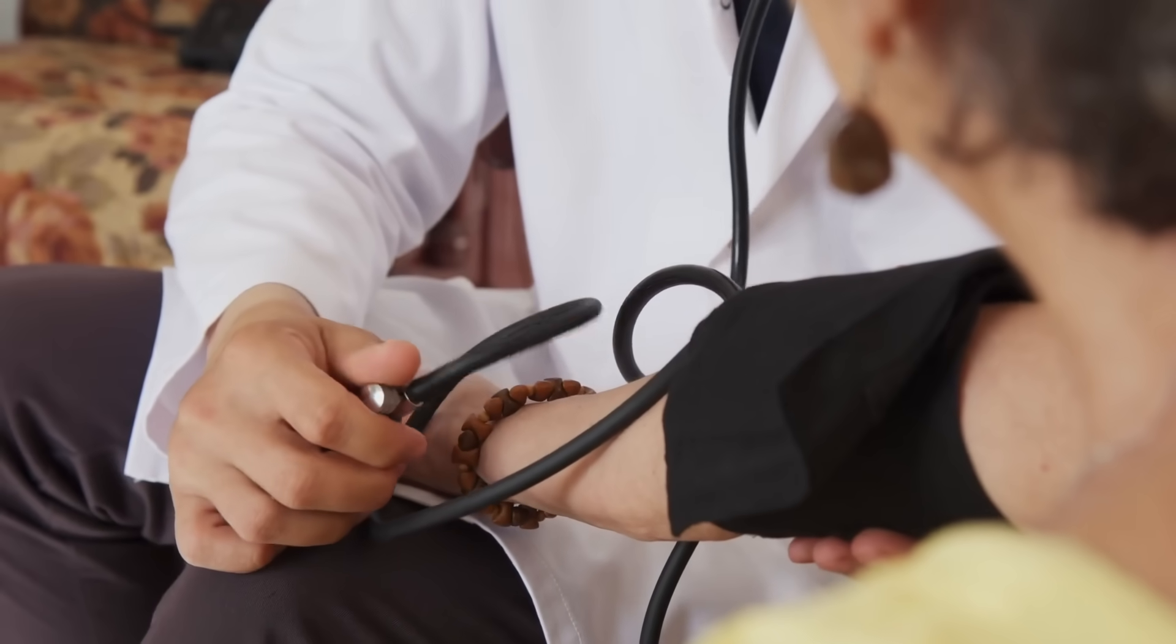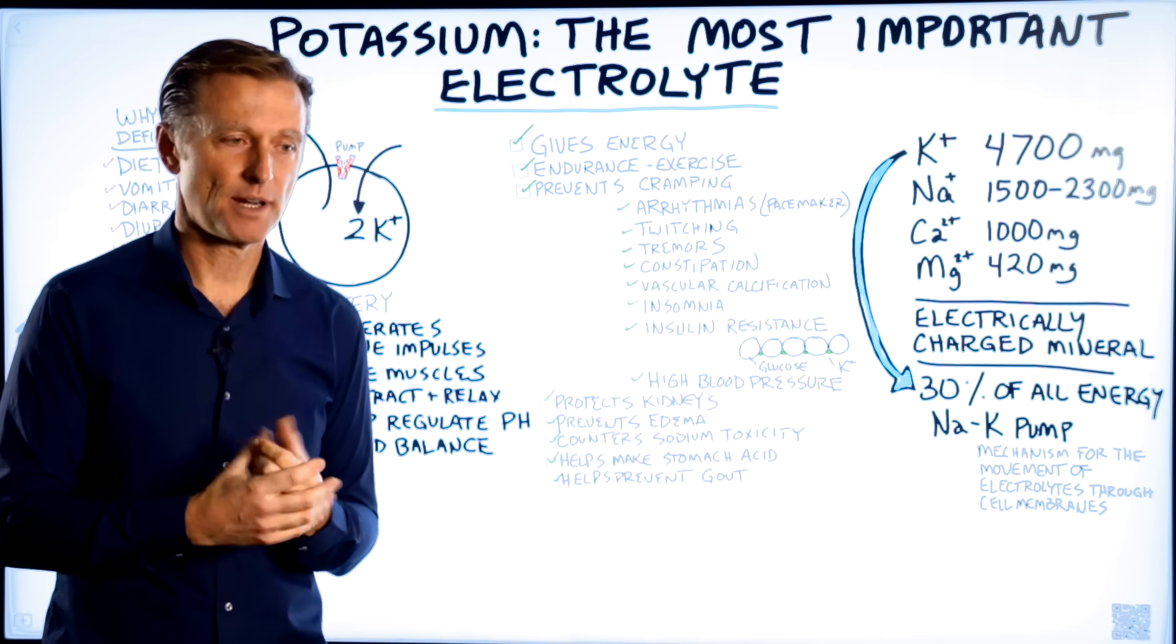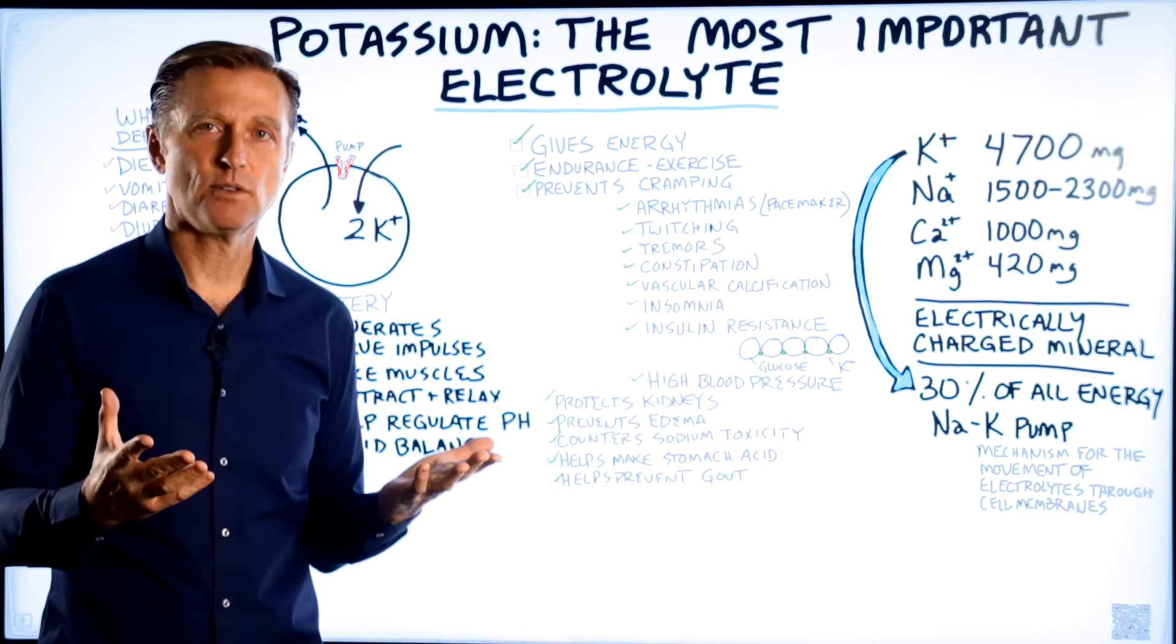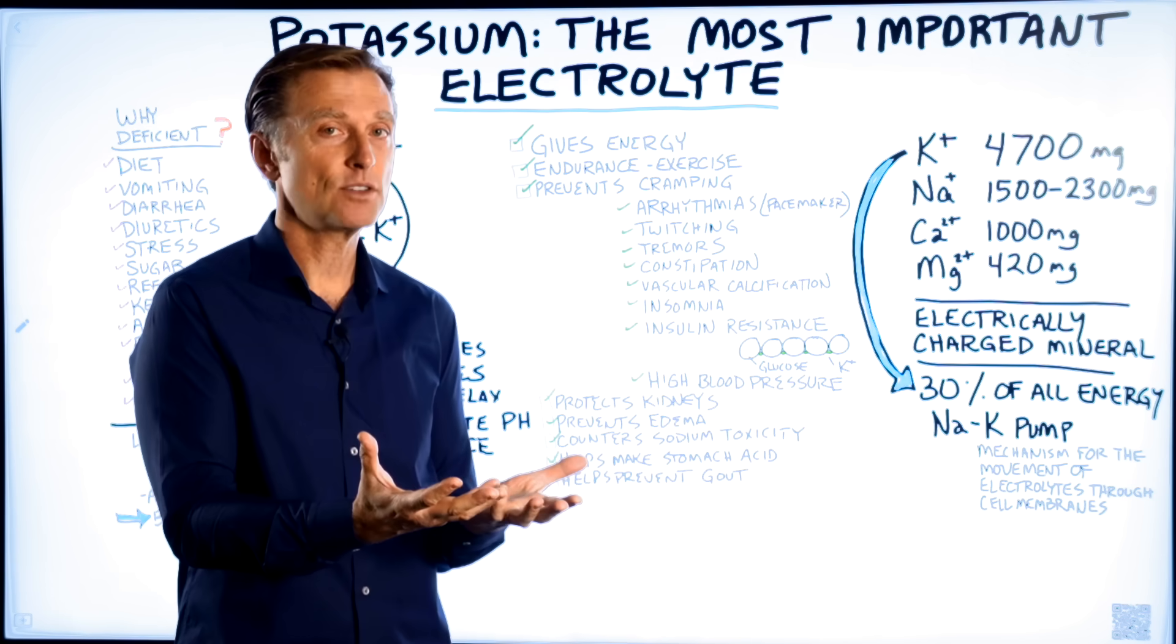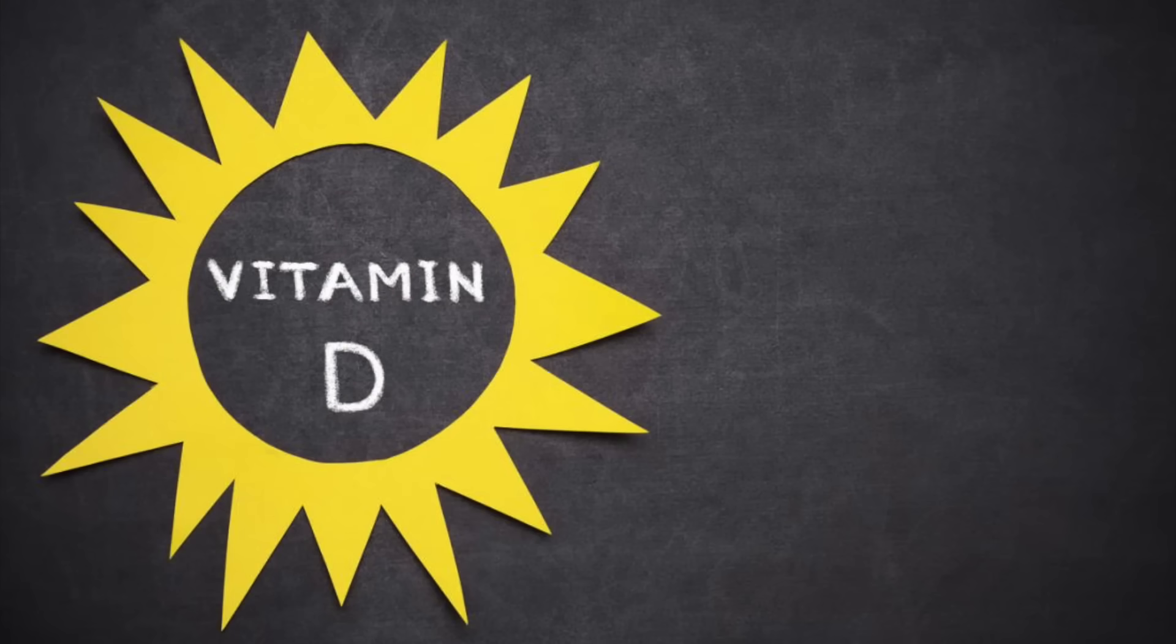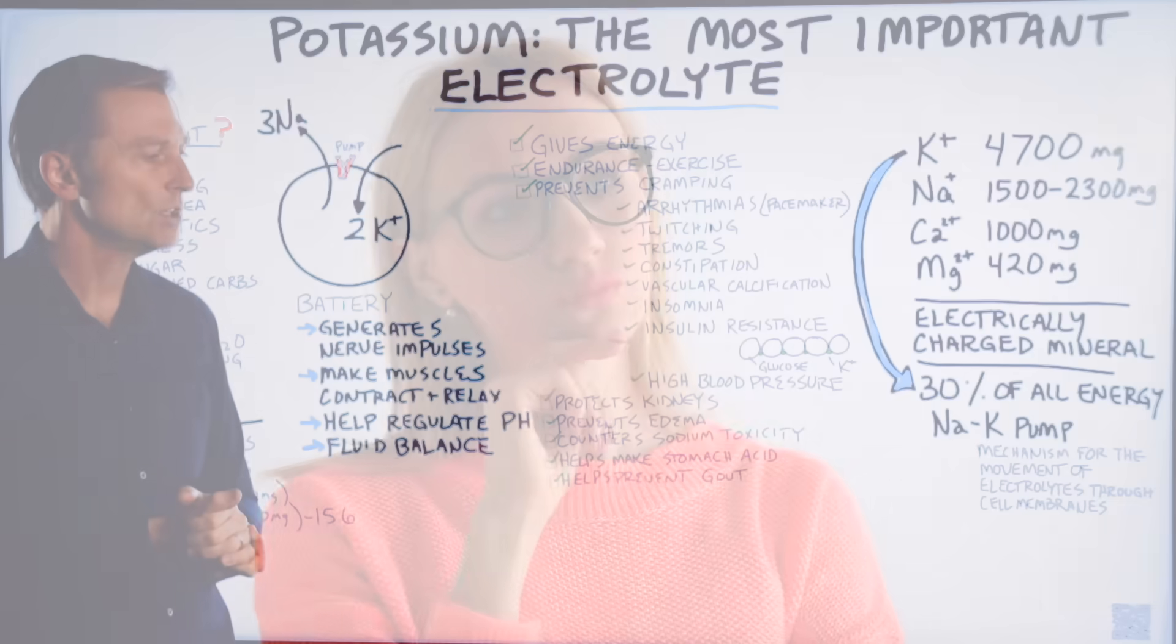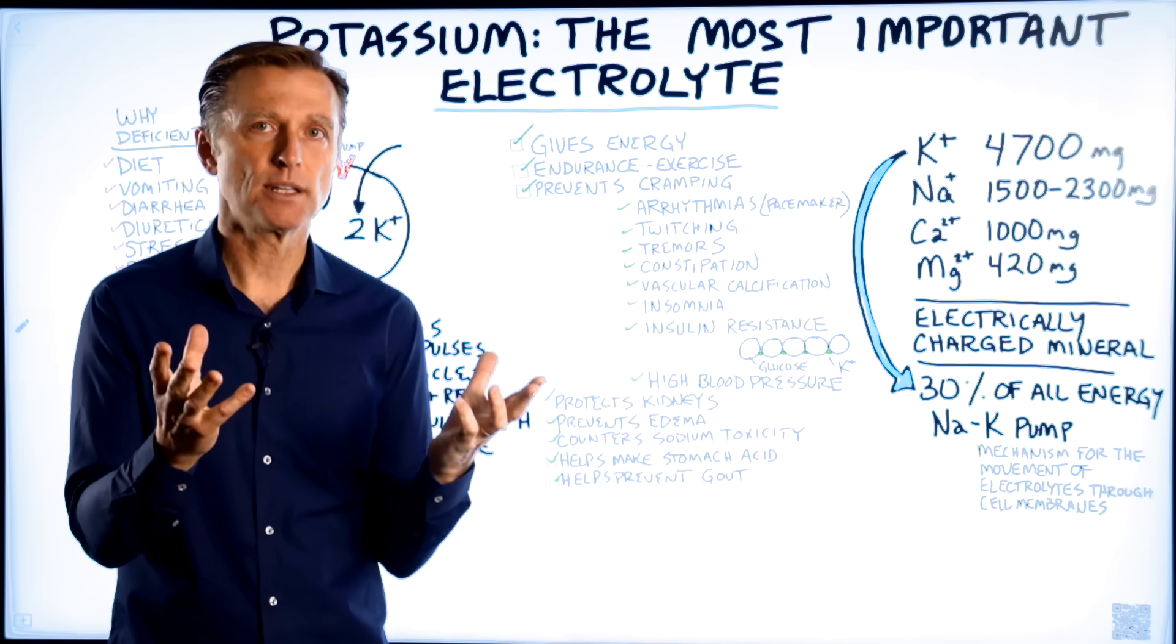The next thing that potassium does is it helps to prevent high blood pressure. If someone has high blood pressure, the easiest thing to do is just to increase the potassium in their body. And it usually will come down. The other cause of high blood pressure is low vitamin D. And then a lot of times people say, well, wait a second, I thought high blood pressure was caused by high sodium.